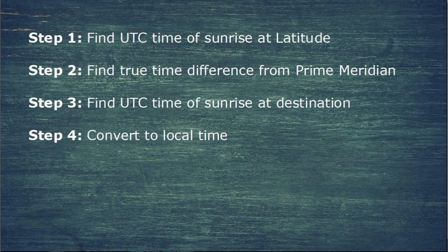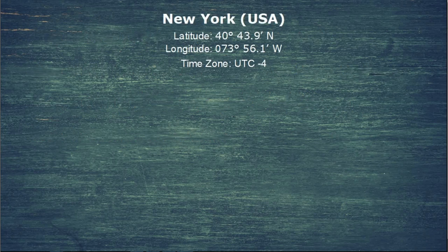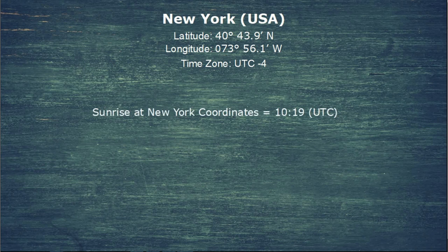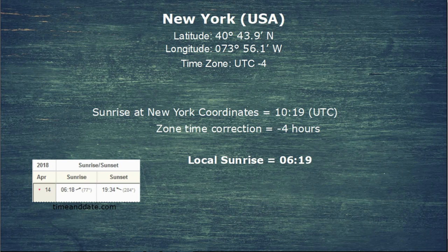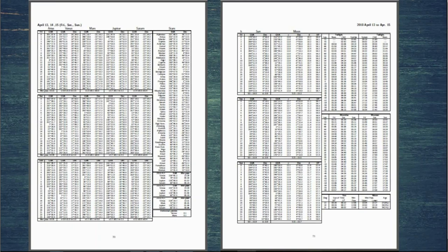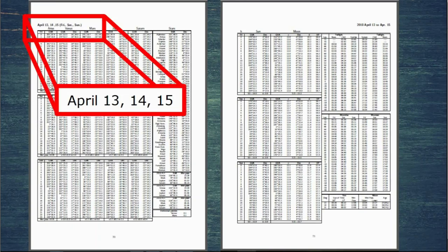The final step is to convert that time into local time using our time zone. In New York on the 14th of April, the time zone is UTC minus 4. We take the universal time and subtract 4 hours to get our local time of sunrise: 6:19 in the morning. Comparing this to timeanddate.com, which gives a sunrise time of 6:18 on April 14th, the one-minute difference is insignificant and explained by rounding in the almanac across the three-day pages covering April 13th–15th. Our calculated time of sunrise is correct.